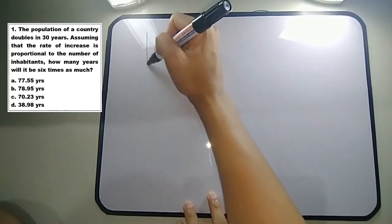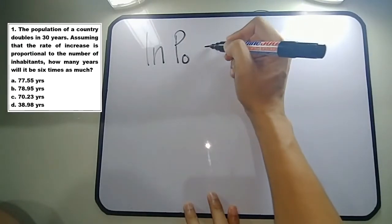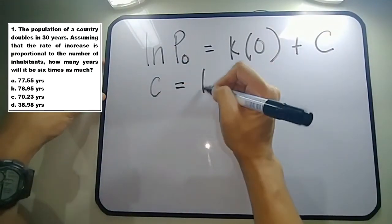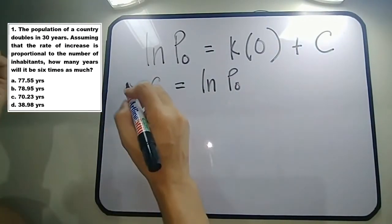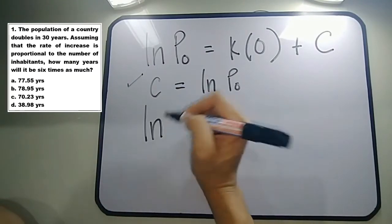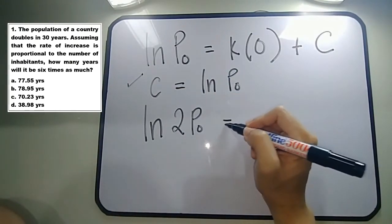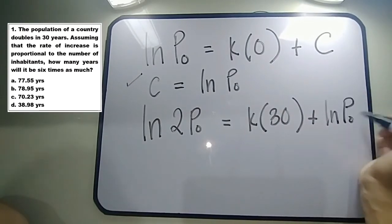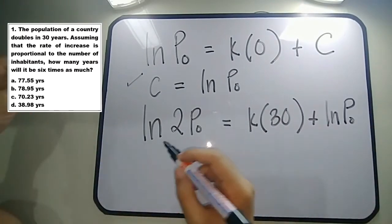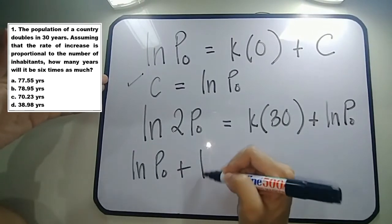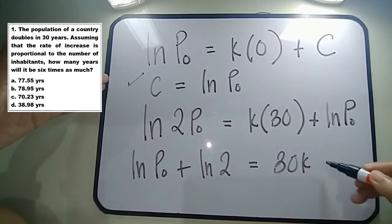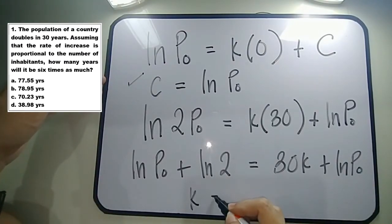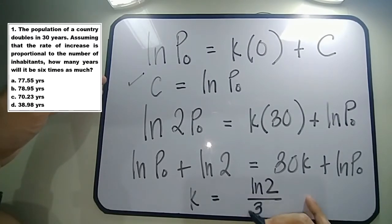Using the first condition, we have ln(p-sub-0) equals k times 0 plus c, so c equals ln(p-sub-0). Using the second condition, ln(2·p0) equals k times 30 plus ln(p-sub-0). Applying the law of logarithms, ln(p0) plus ln(2) equals 30k plus ln(p0). Subtracting ln(p0) from both sides, we get k equals ln2 over 30.